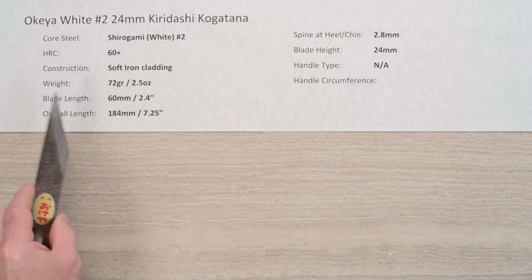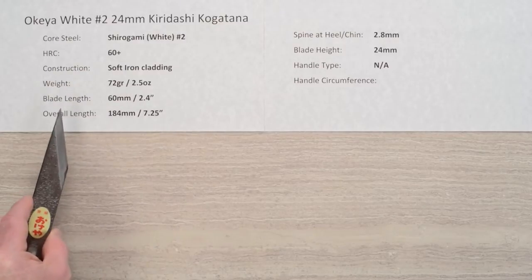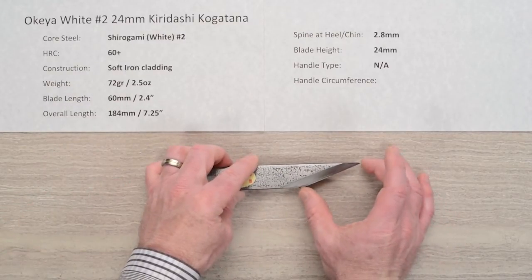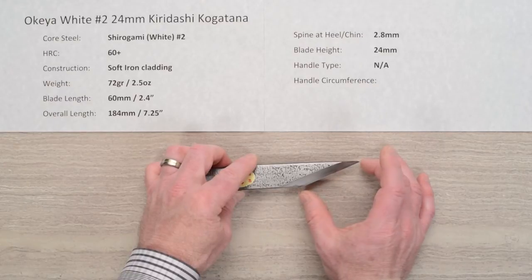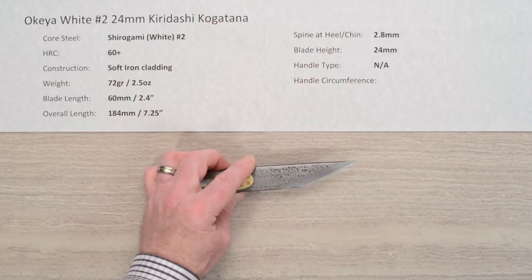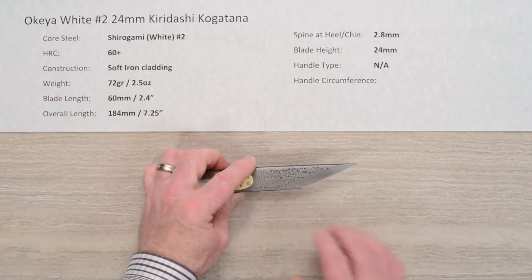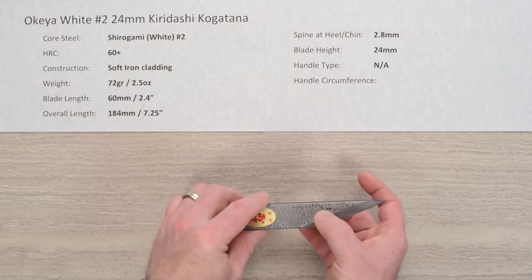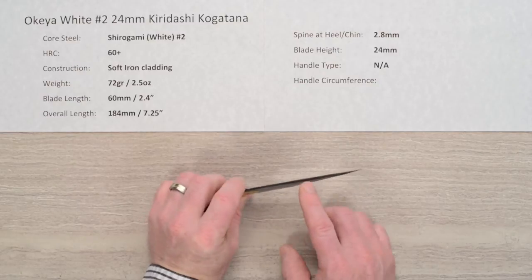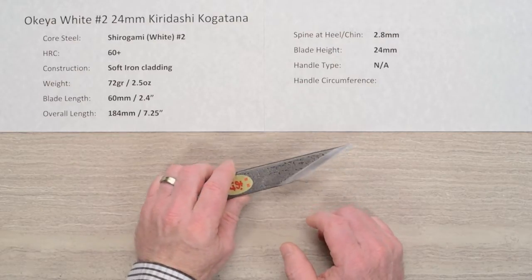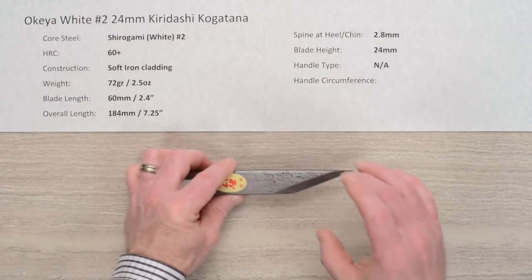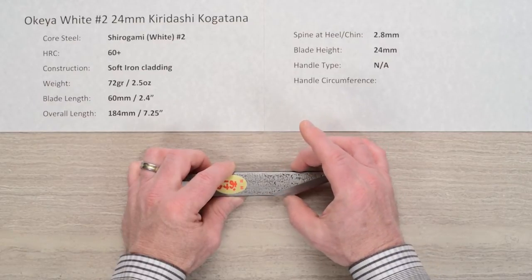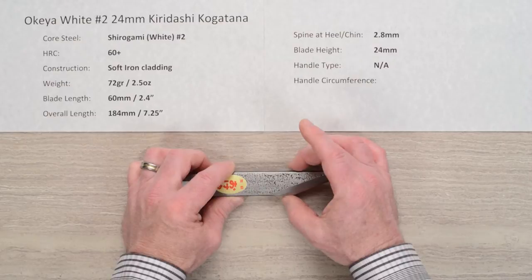The weight on the knife is 72 grams, 2.5 ounces. Blade length right at 60 millimeter, measuring this area right here, the straight part of the edge itself. The overall length about seven and a quarter inches. The spine thickness is pretty similar throughout and above the grind of the blade I measured at about 2.8 millimeters. The blade height, that's where the 24 millimeter comes in, measured right here above where the heel starts, about just slightly less than an inch.